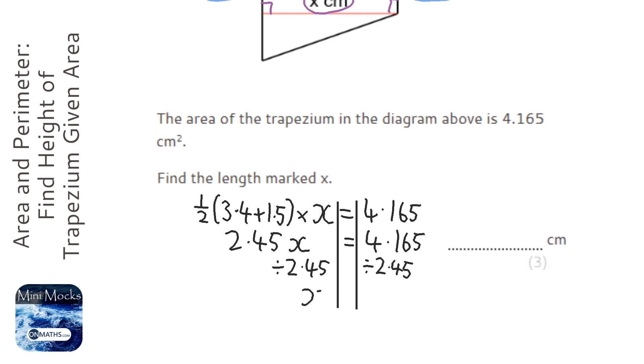So we're going to be left with x on the left-hand side, and I'm going to do 4.165 divided by 2.45, and we get the answer of 1.7.